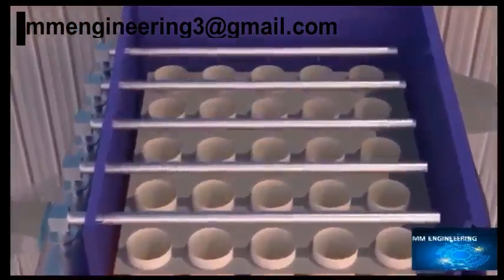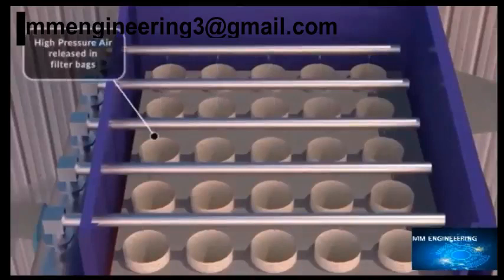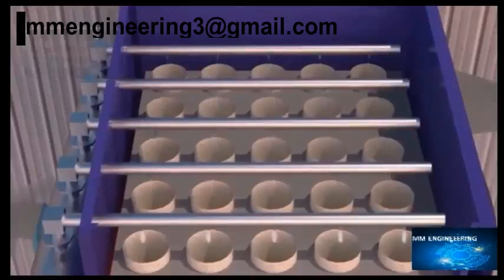The dust then falls off into the hopper. This process takes place at regular intervals of time and this allows the filtration process to work smoothly. This is how a PulseJet dust collector system works.